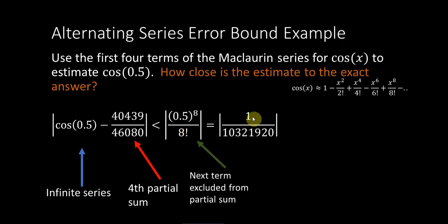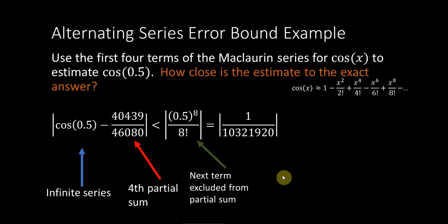And at this point, I should pause and emphasize just how great this is, right? We don't know the exact answer to cosine of 0.5. We produce a four-term polynomial, which is a relatively small polynomial, just got four terms. And based on those four terms and what we know about the alternating series error bound,